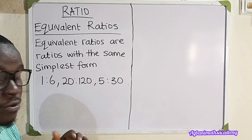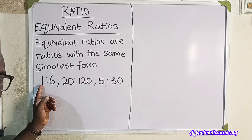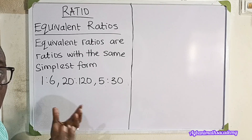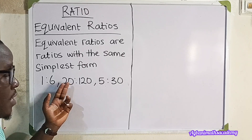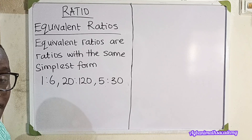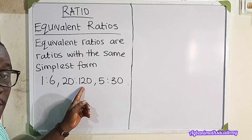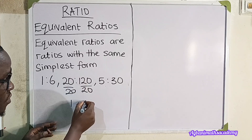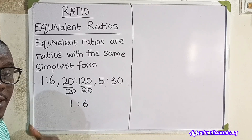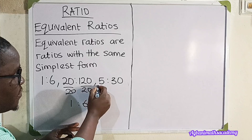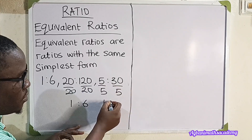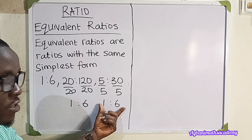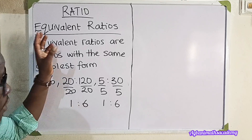If you have a particular ratio and want to find its simplest form, you need to find a number that will divide both sides. For 1 is to 6, nothing divides both apart from 1, so it stays 1 is to 6. For 20 is to 120, dividing both by 20 gives 1 is to 6. For 5 is to 30, dividing both by 5 gives 1 is to 6. The simplest form of all three ratios is 1 is to 6, which shows they are equivalent ratios.